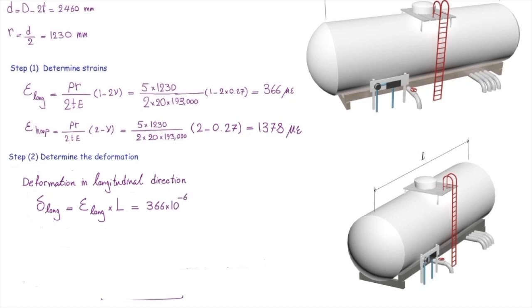So I can determine how much is the deformation by multiplying strain by the length. So 366 multiplied by 6,000 millimeter. Make sure that you convert 366 to epsilon, so we multiply that by 10 to the minus 6, and length should be converted into millimeter. And that would be 2.2 millimeter. In other words, the length of that vessel is getting longer by 2.2 millimeter.